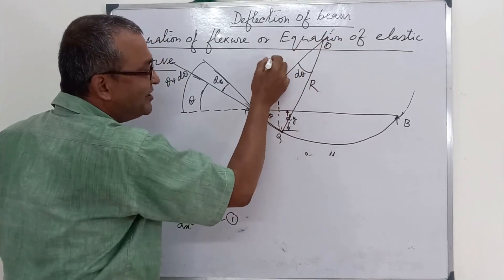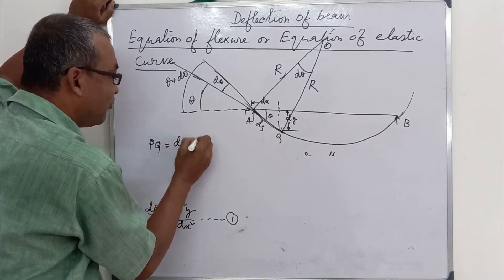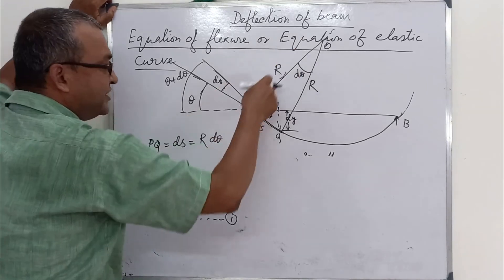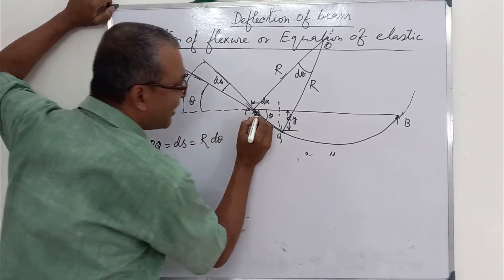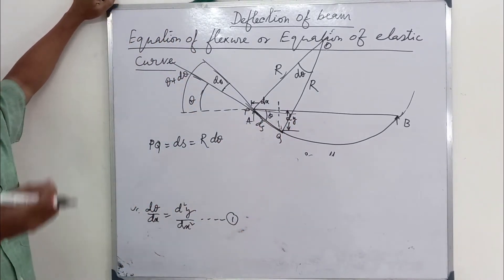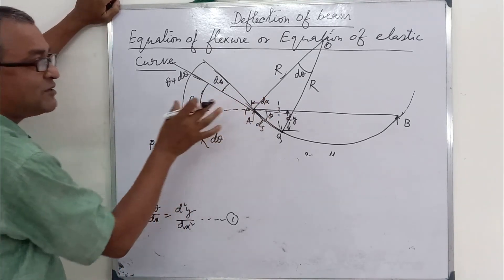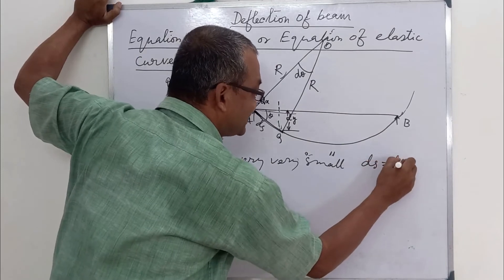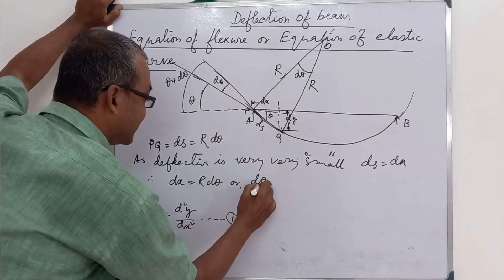From the geometry of the arc, PQ equals ds equals R·dθ, where R is the radius of curvature. Since the deflection is very small, ds is approximately equal to dx. Therefore, dx equals R·dθ, which gives dθ/dx equals 1/R. This is equation number two.